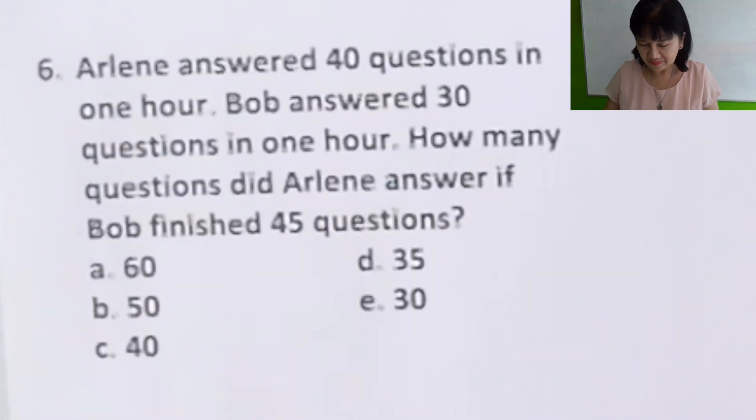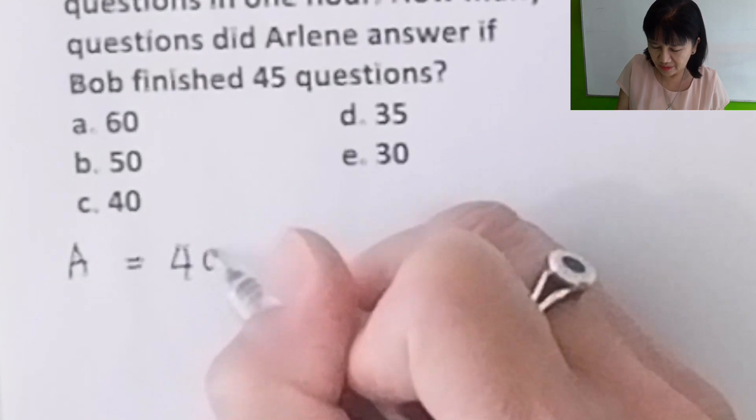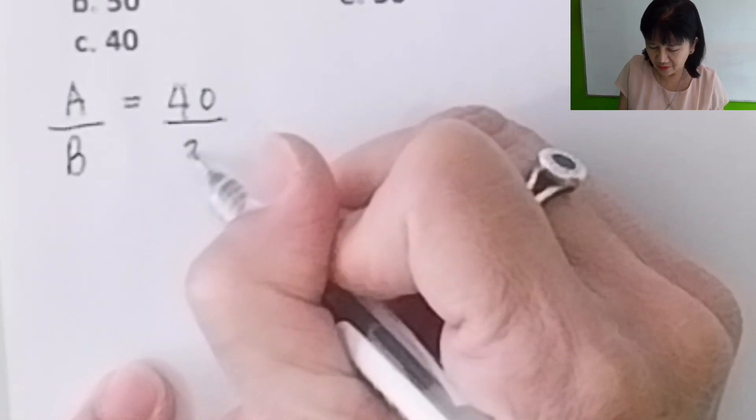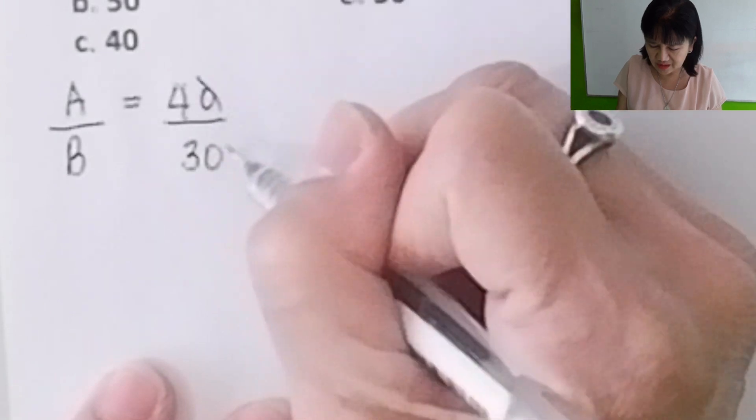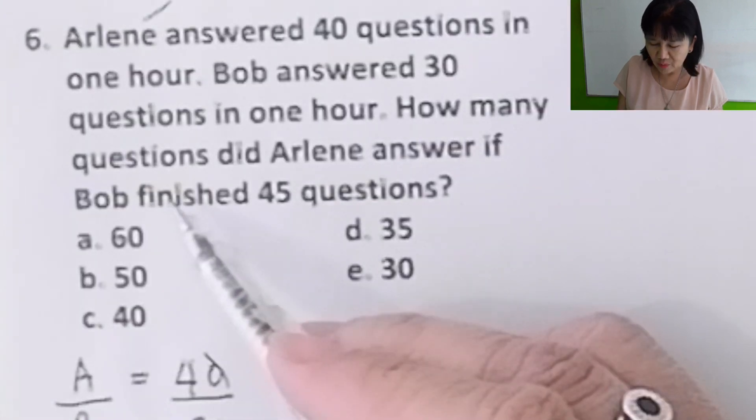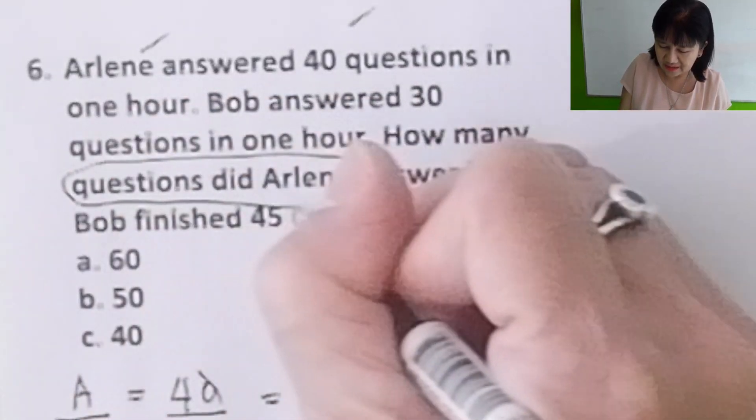Problem number six: Arlene answered 40 questions in an hour, Bob answered 30 questions in one hour. How many questions did Arlene answer if Bob finished 45 questions? If you're given problems like this, you use ratio and proportion. Arlene answered 40 questions in one hour, Bob answered 30 questions. So the ratio is 40 over 30. You can just cancel this so it will be easier: this is 4 over 3. How many questions did Arlene answer? Arlene is A. We let this be A, the questions that Arlene answered. If Bob finished 45 questions. The numerators are for Arlene, the denominators are for Bob.